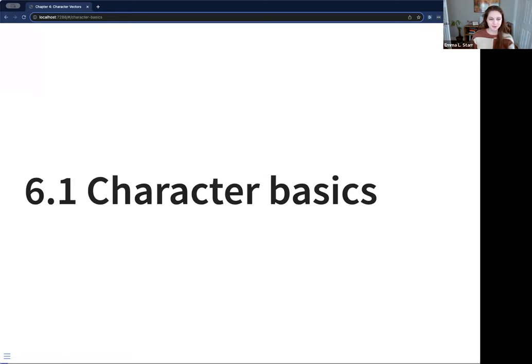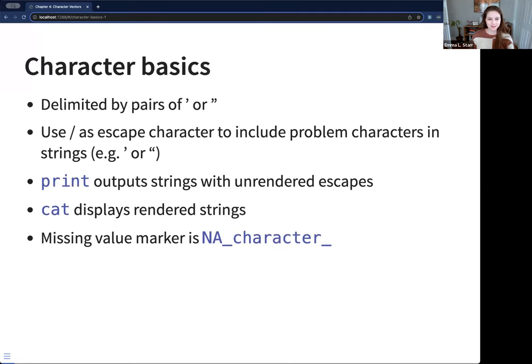So first, we're going over some character vector basics. I think we all know these things. They're delimited by pairs of quotes, single or double. You use the slash as an escape character to include characters that may be problematic in strings, such as quotations. Print outputs strings with unrendered escapes, whereas cat displays the rendered strings, and the missing value marker is NA underscore character.